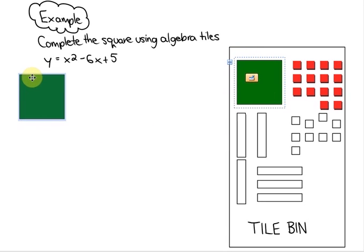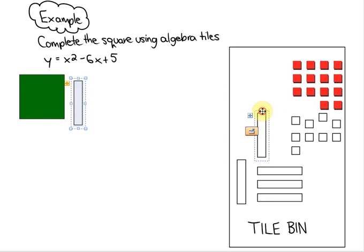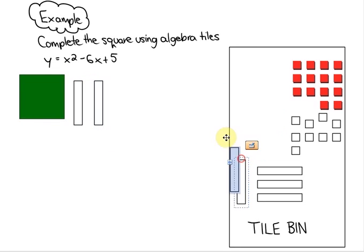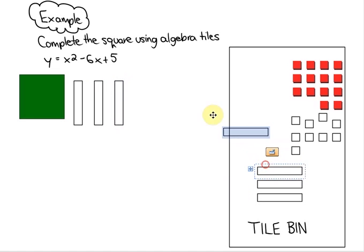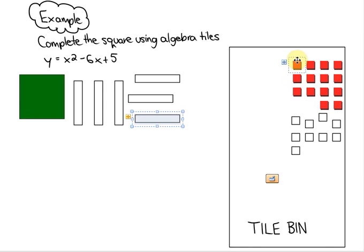Here's x squared. Here are negative 6x tiles. And here are positive 5 integer tiles.